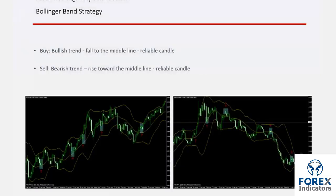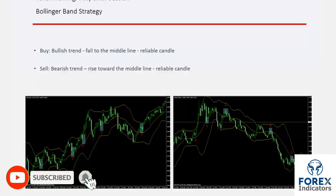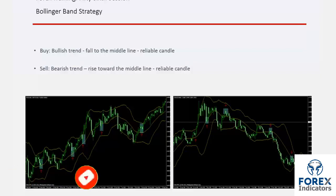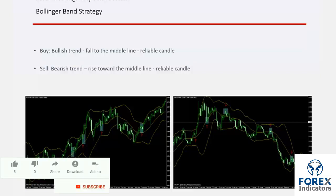A buy order can be placed on an uptrend when there is a decline to the middle line EMA50 and a powerful bullish candle forms on the EMA50. If on a downward trend a temporary ascent occurs towards the EMA50, then a sell order can be placed after a bearish candlestick forms on EMA50.